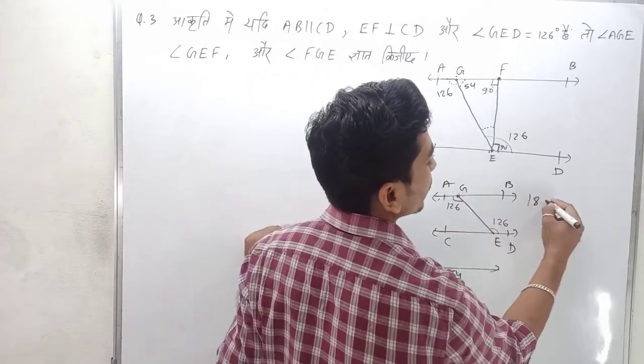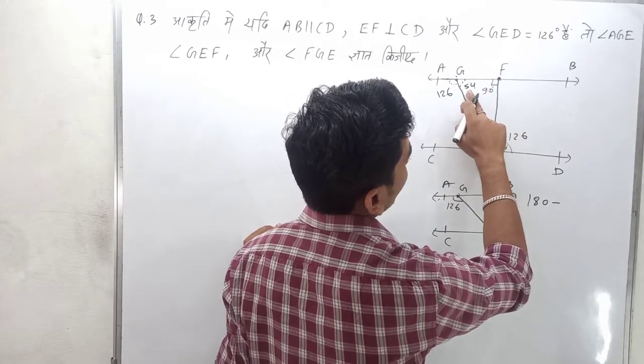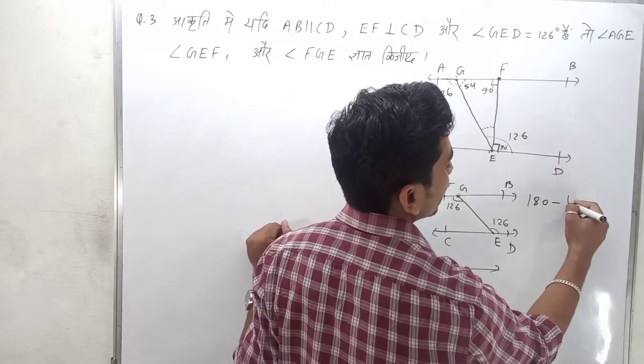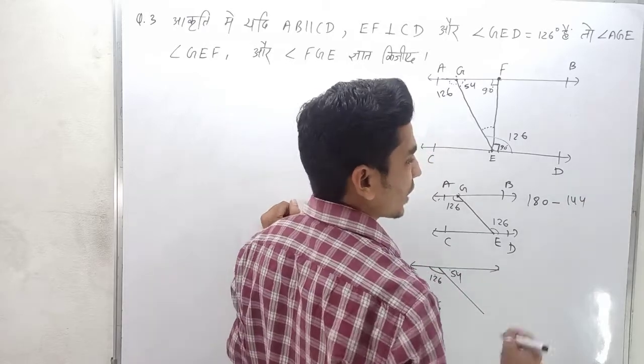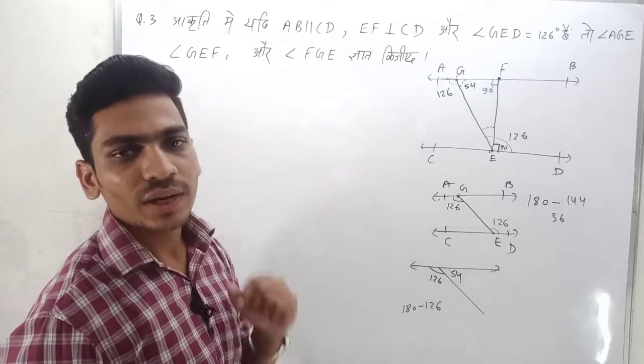180 minus 144 equals 36 degrees. So this is the third angle.